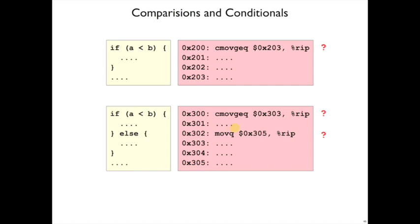Otherwise, a is less than b, and we do this. And then when we get to the end here, we need to skip over the else to continue where they both continue down here at 305. So we would unconditionally move hex address 305 into the program counter.